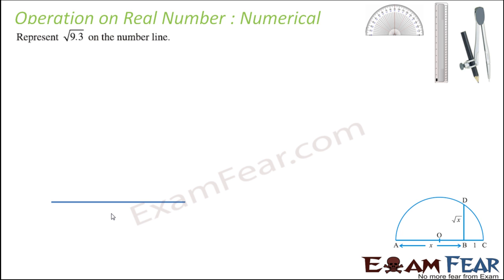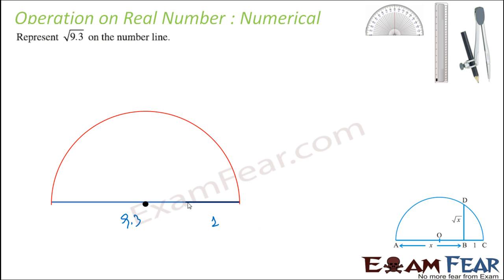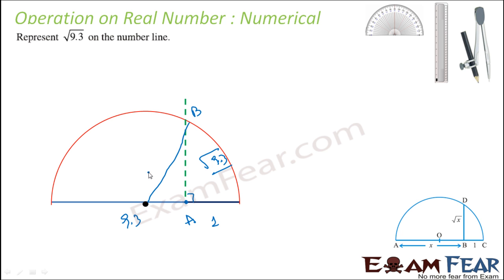We need to represent root 9.3 on the number line. Draw a line of 9.3 units, then add a line of 1 unit. Taking the whole length as a diameter, draw the center and construct a semicircle. From the junction point between the 9.3 and 1 unit segments, draw a perpendicular line up to where it meets the semicircle — call that point AB. That point AB represents root 9.3. By Pythagoras theorem, with the radius as (9.3 + 1)/2 and OA as (9.3 − 1)/2, the perpendicular length equals root 9.3.